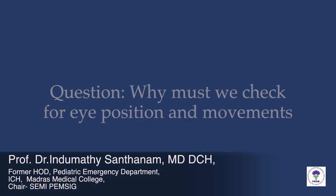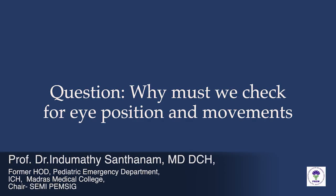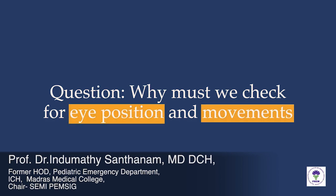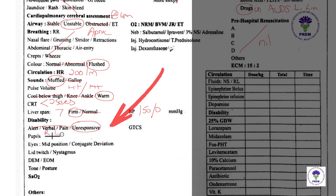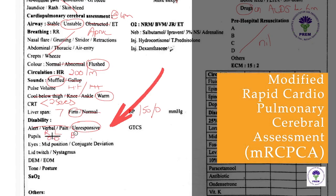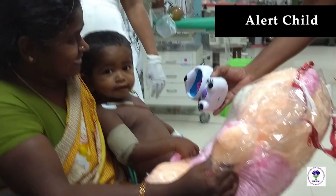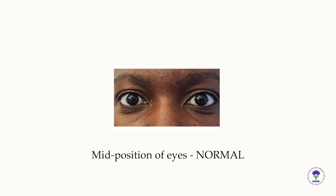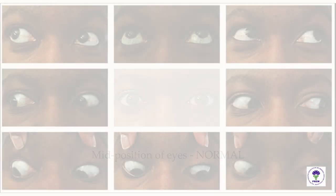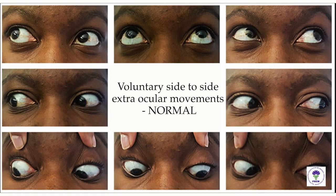In this video, let us learn why we need to check for eye position and movements every time we perform the modified rapid cardiopulmonary cerebral assessment. In alert children, the normal position of eyes is described as mid position, and the voluntary side-to-side movements of the eyes are described as normal extraocular movements.